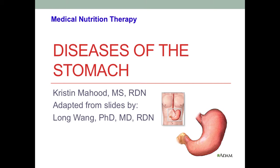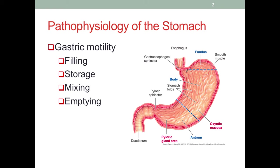In this lecture, we will discuss certain disease conditions associated with the stomach. Here we have a figure of our stomach. We can see it is a J-shaped structure located in our upper left abdomen. One important function is to receive, process, and pass along the food bolus from the esophagus. The entry from the esophagus into the stomach is controlled by the gastroesophageal sphincter, also called the lower esophageal sphincter, or LES.